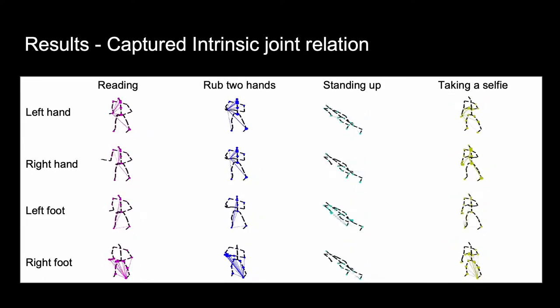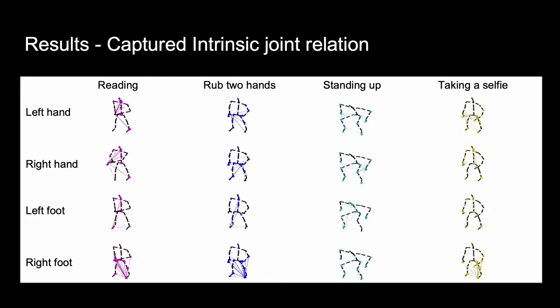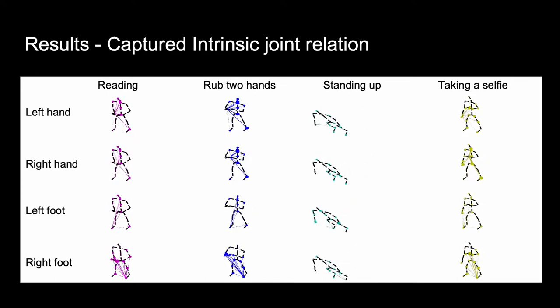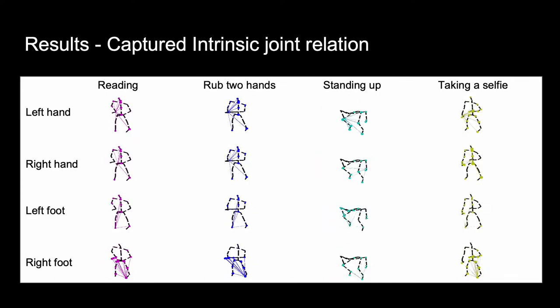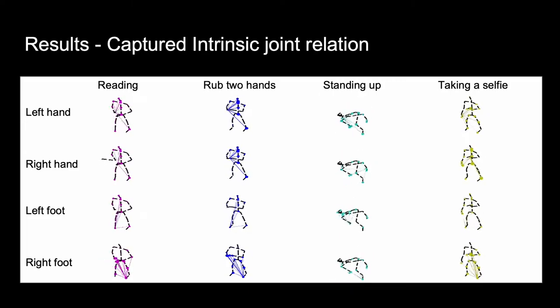We observed that similar poses could have different intrinsic topologies depending on their behavior of context, which is why our model distinguishes behavior of pattern better.